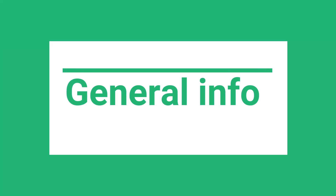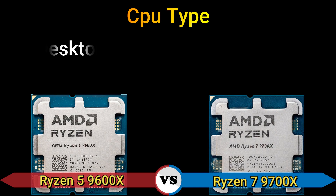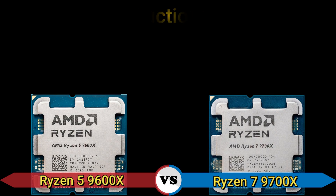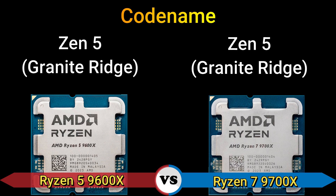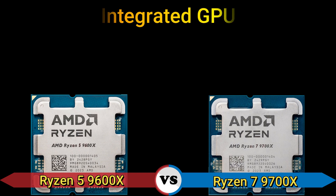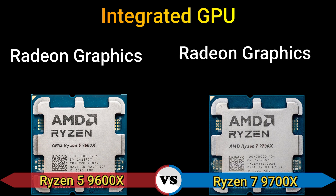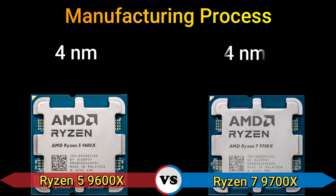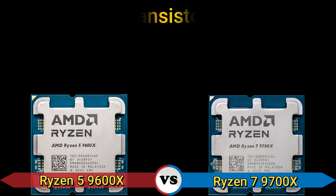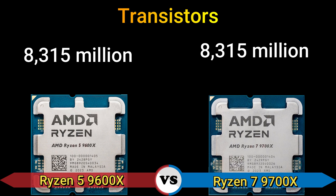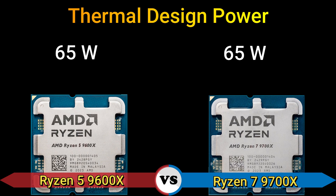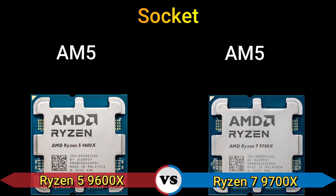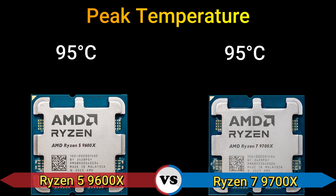First, we start with general information. CPU type: desktop. Instruction set: x86-64. Codename: Zen 5, Granite Ridge. Integrated GPU: Radeon Graphics. Manufacturing process: 4 nanometer. Transistors: 8315 million. Die size: 70.6 millimeter. Thermal design power: 65 watt. Socket: AM5. Spec temperature: 95 degrees Celsius.